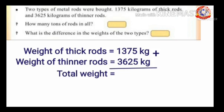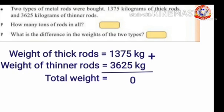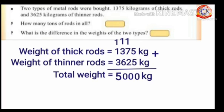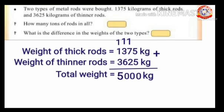Let's find the total weight: add 1375 and 3625. 5+5=10, write 0 carry 1; 7+2+1=10, write 0 carry 1; 3+6+1=10, write 0 carry 1; 1+3+1=5. Weight of metal rods equals 5000 kilograms. We know 1000 kg make one ton, so 5000 kg make 5 tons. How many tons of rods in all? Five tons.